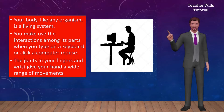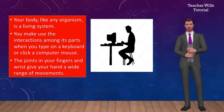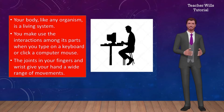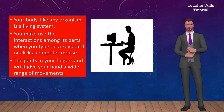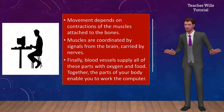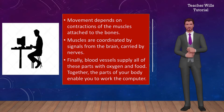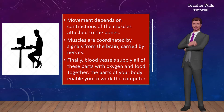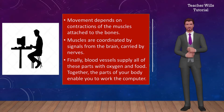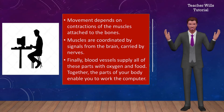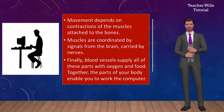A body system includes organs that interact. Your body, like any organism, is a living system. You make use of the interactions among its parts when you type on a keyboard or click a computer mouse. The joints in your fingers and wrist give your hand a wide range of movements, but your bones themselves cannot move. Movement depends on contractions of the muscles attached to the bones. Muscles are coordinated by signals from the brain, carried by nerves. Finally, blood vessels supply all of these parts with oxygen and food. Together, the parts of your body enable you to work the computer. You are certainly more than the sum of your parts, and so are all biological systems.